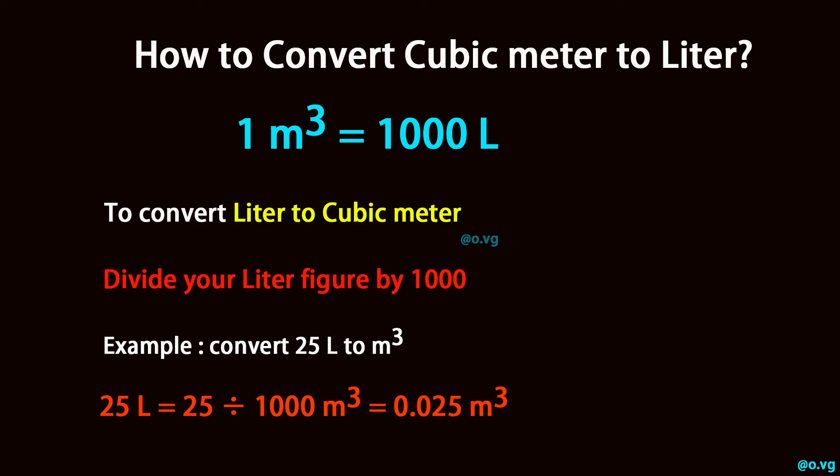Example: convert 25 L to cubic meters (m³). 25 L equals 25 divided by 1,000 cubic meters, which equals 0.025 cubic meters.